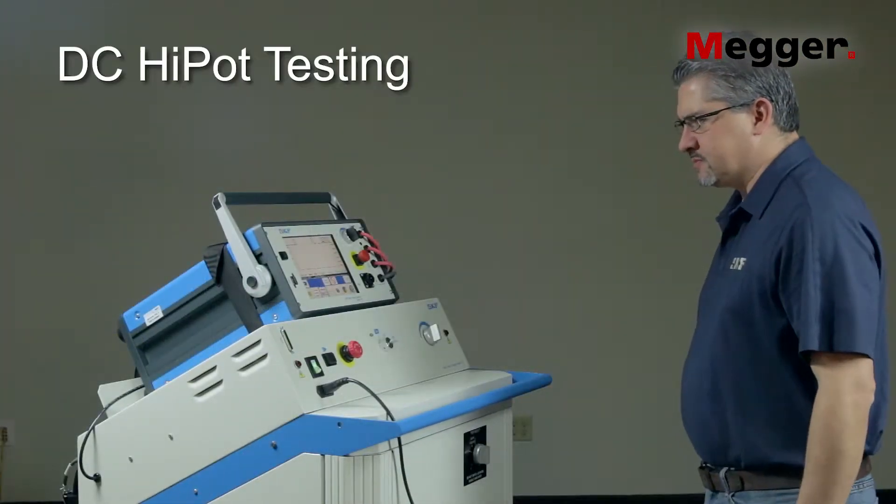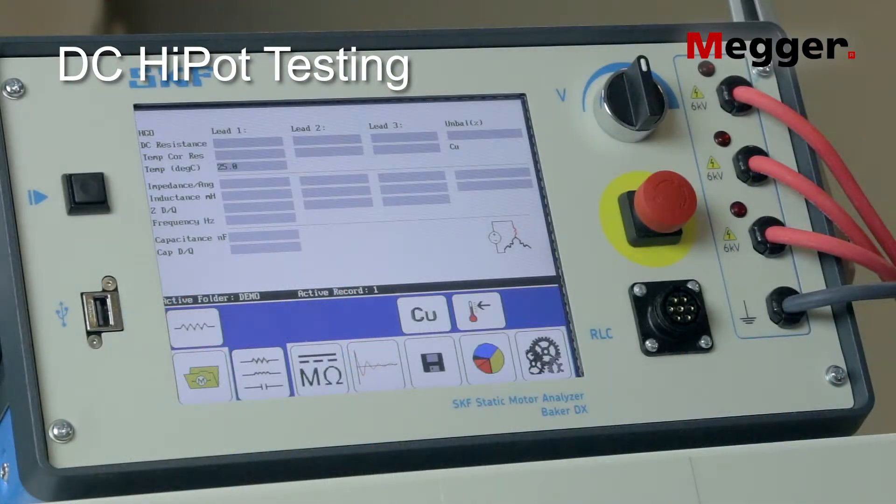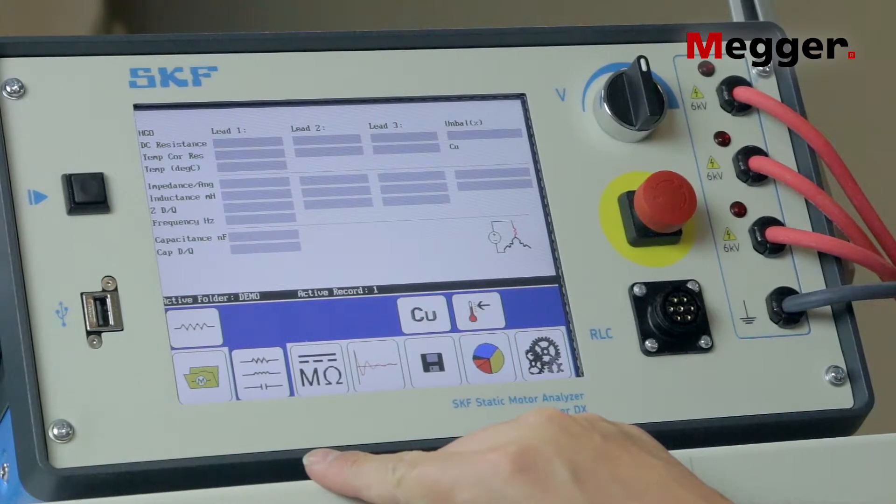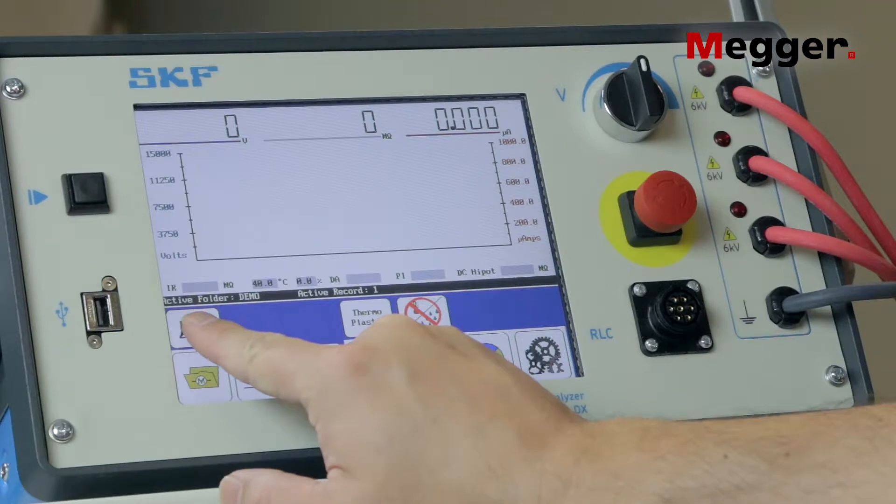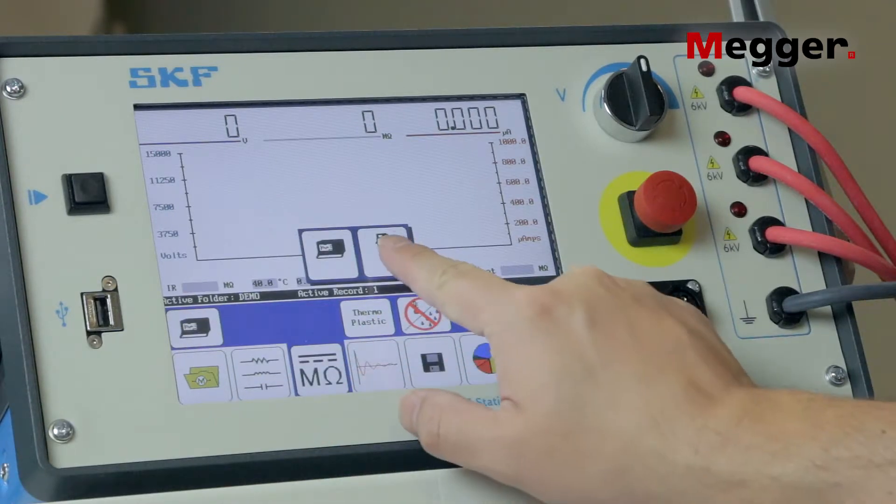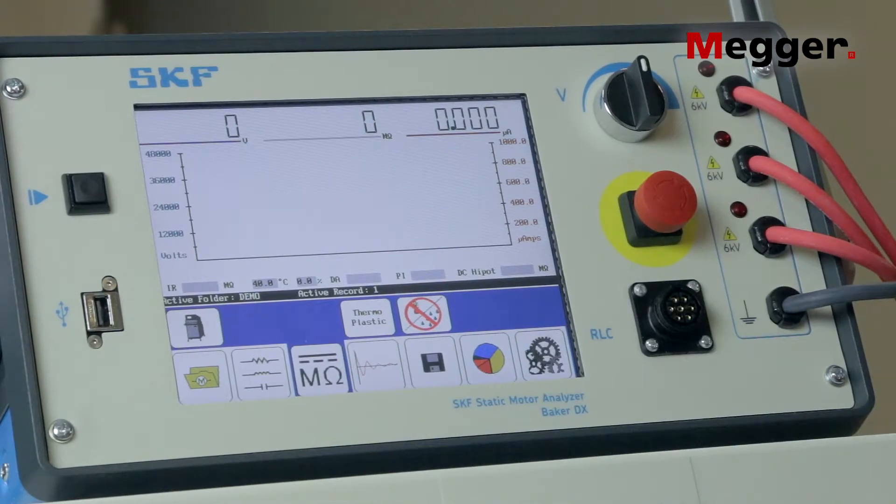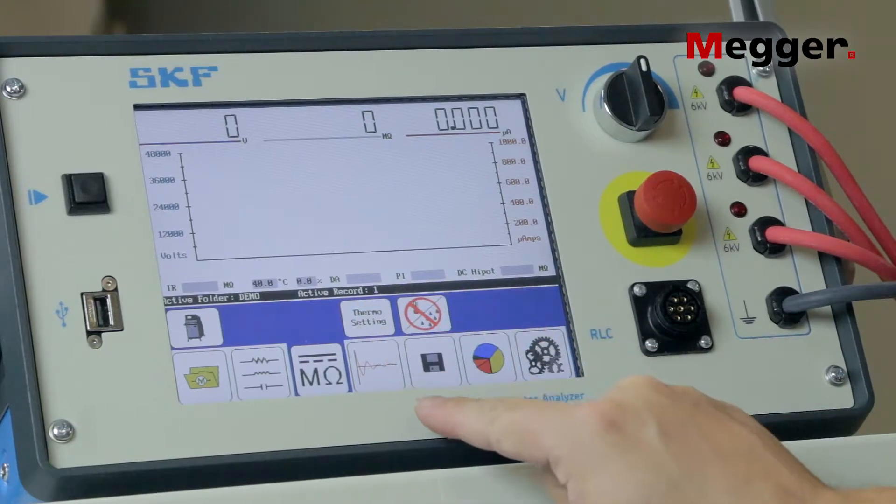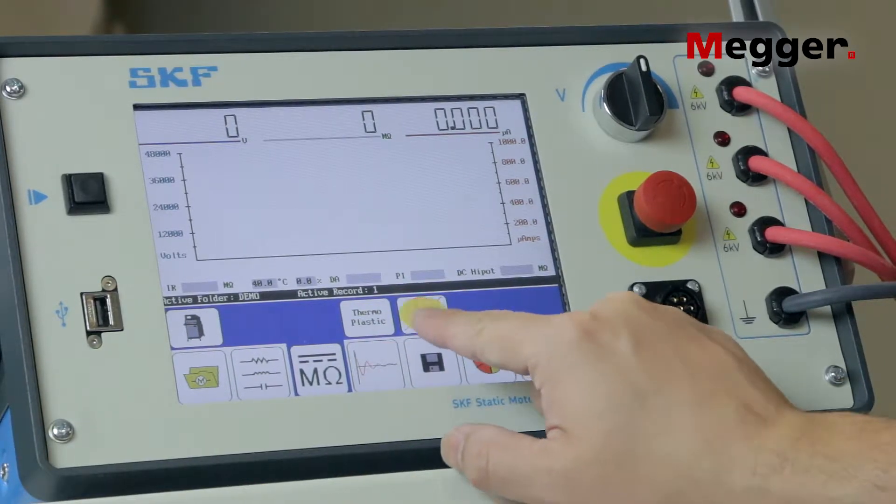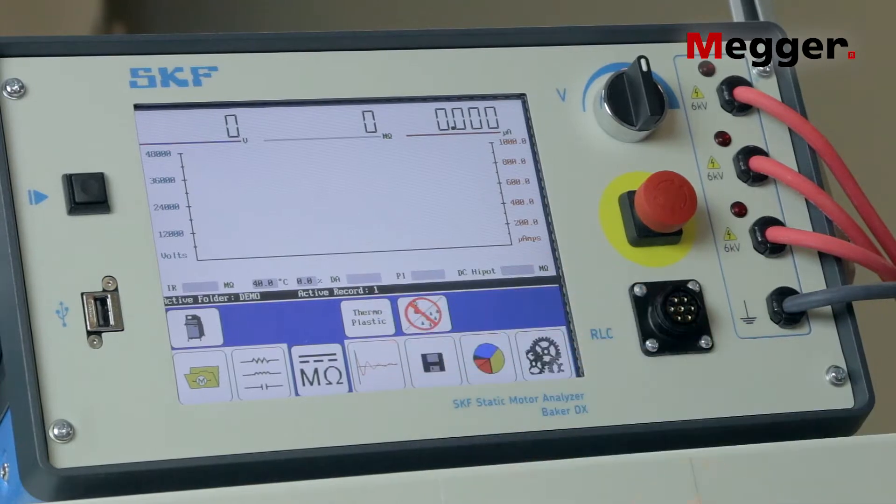Let's start with DC high pot testing. On the main screen of the DX, select the DC test. Select the power pack configuration. Select either thermoplastic or thermal setting corresponding to the type of insulation being tested. Enter the stator winding temperature.